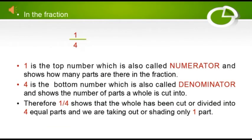In the fraction one by four, the number at the bottom is four, which is also called the denominator and shows the number of parts a whole is divided or cut into. The number at the top is one, which is also called the numerator and shows how many parts are there in the fraction. Therefore, one by four shows that the whole has been cut or divided into four equal parts and we are taking out or shading only one part.